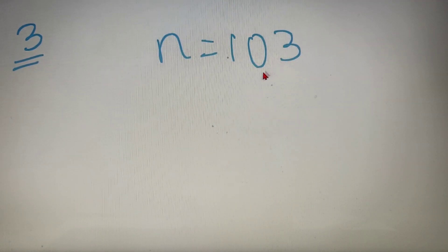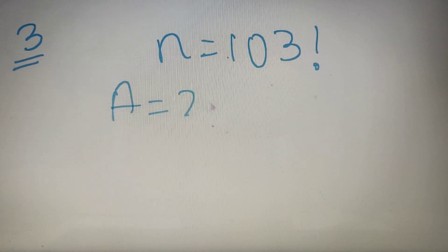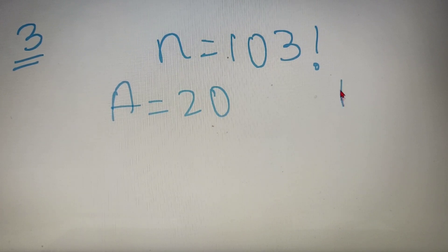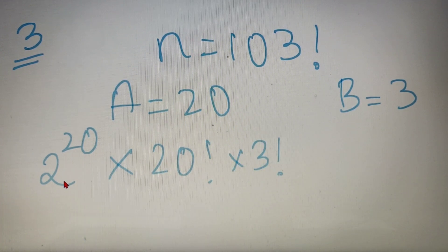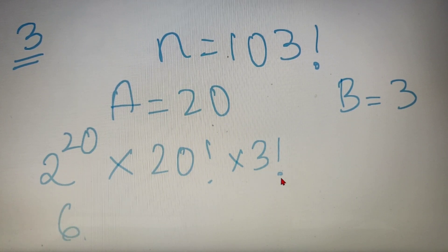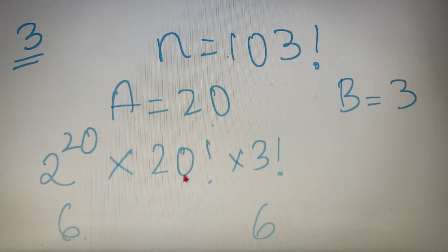For our third and final example, let's take the value of n as 103, so we have to find the last non-zero digit of 103 factorial. Here, a is equal to 20 because 103 divided by 5 gives the quotient as 20, and the remainder is equal to 3. So according to the formula, we have to find the last non-zero digit of 2 to the power 20, into 20 factorial, into 3 factorial. The last digit of 2 to the power 20 can be found using cyclicity, and it comes out to be 6. And 3 factorial is 6 itself. However, I don't yet know the last non-zero digit of 20 factorial, so I will repeat the process.